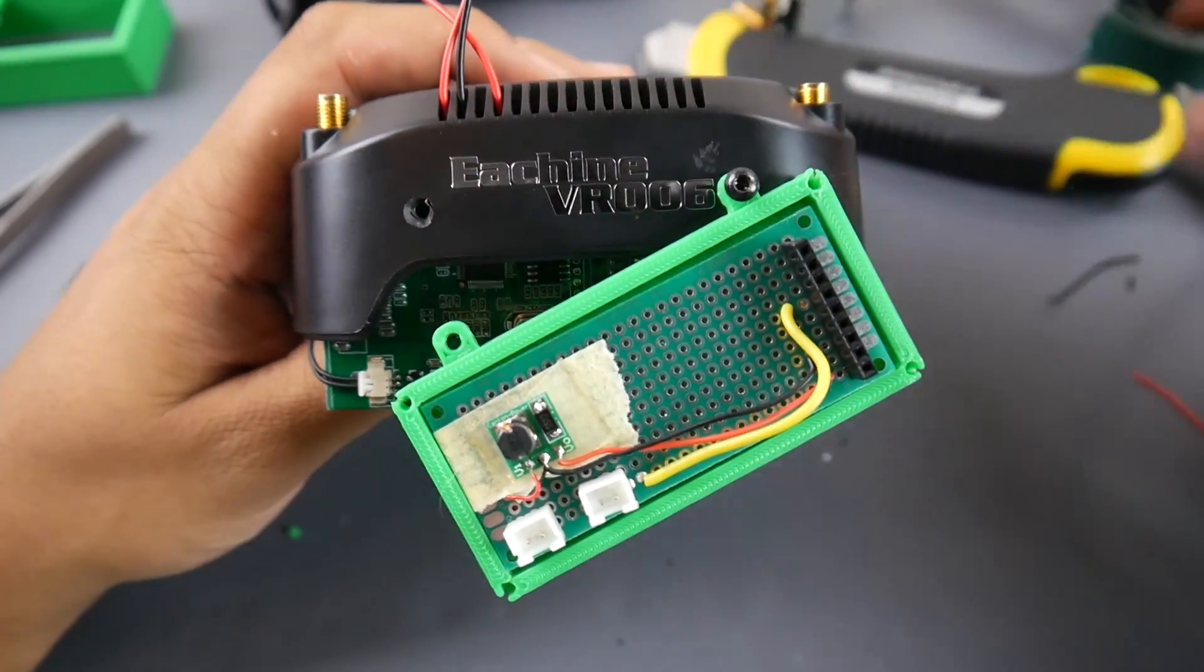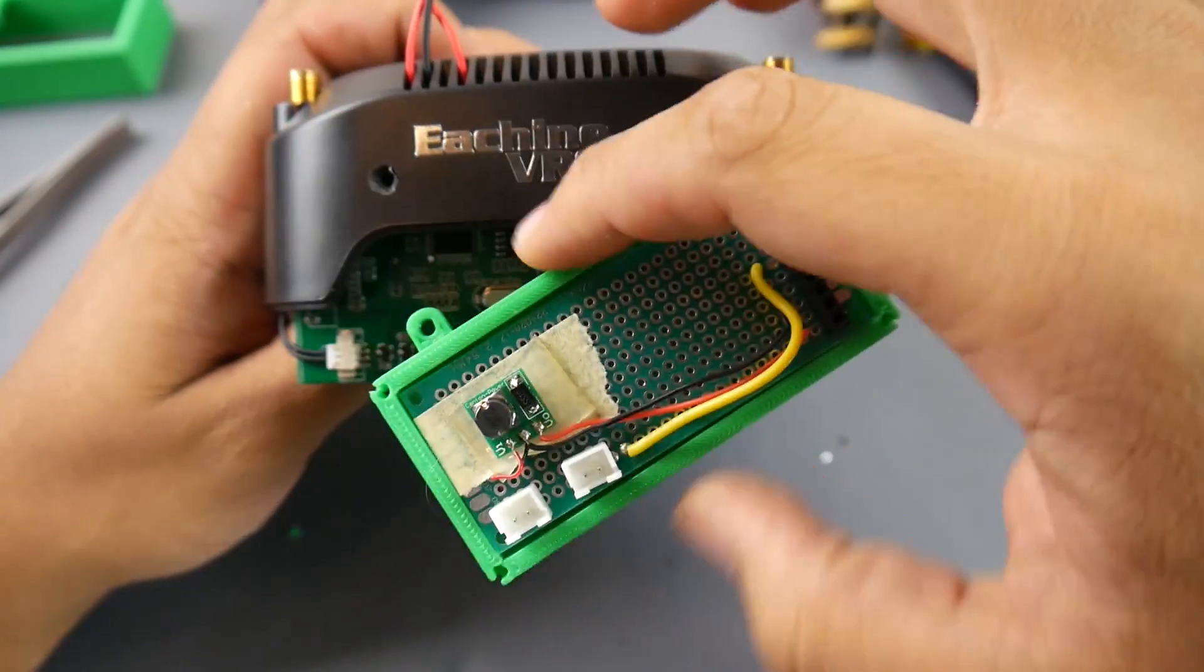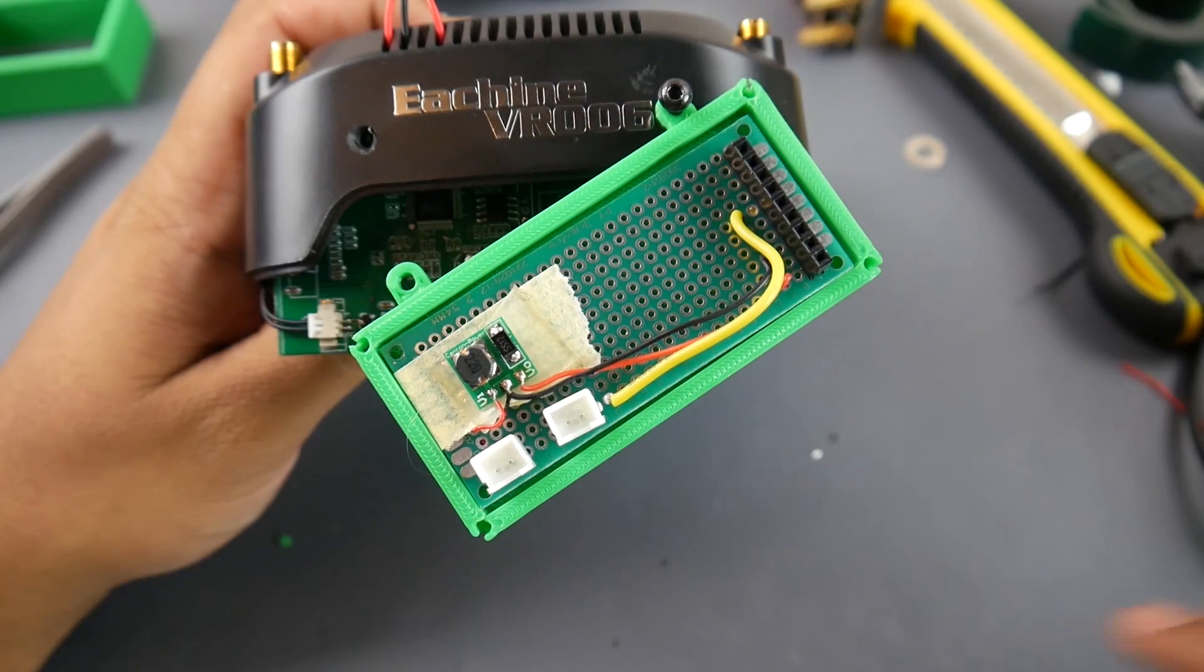So now what I did was I just took an X-Acto knife and I just went through. I didn't go all the way through here. I just got in pretty deep until I saw it kind of bulge out from the back.